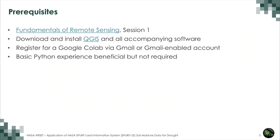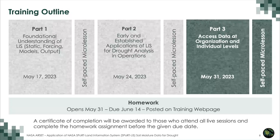The prerequisites for the three-part training are the RSET's Fundamentals of Remote Sensing Session 1, download and install QGIS and all accompanying software, register for Google Colab via Gmail or a Gmail-enabled account, and basic Python experience is beneficial but not required. All materials and recordings from each session are currently available on the training web page. In part three, the focus will be on accessing data at organization and individual levels. There will be a self-paced micro lesson following each session, and one homework assignment posted today with a due date of June 14th. A certificate of completion will be awarded to those who attend all live sessions and complete the homework assignment before the given due date.